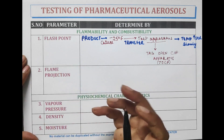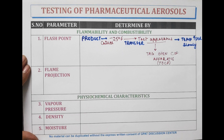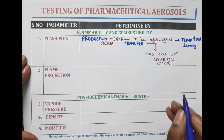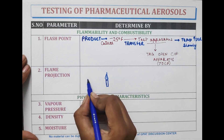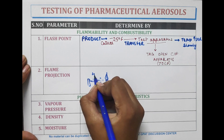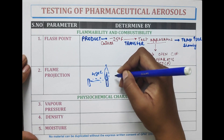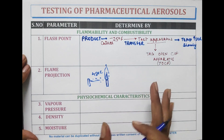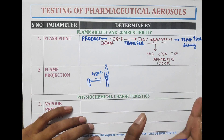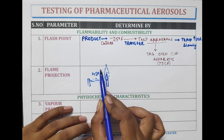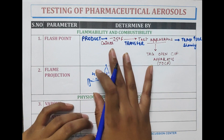Another parameter is flame projection. Flame projection indicates the effect of an aerosol on the extension of an open flame. In this, the product is sprayed for 4 seconds toward a Bunsen burner flame. The flame is extended when the product reaches it, and the length is measured by a ruler. The radiance of flame projection is indicative of the aerosol's extension of an open flame.